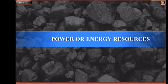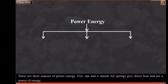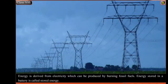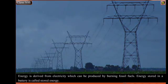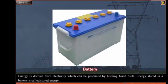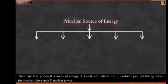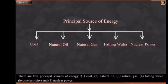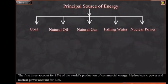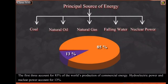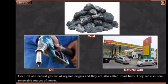Power or Energy Resources: There are three sources of power energy. Fire, sun, and natural hot springs give direct heat and are a source of energy. Energy is derived from electricity, which can be produced by burning fossil fuels. Energy stored in a battery is called stored energy. There are five principal sources of energy: coal, natural oil, natural gas, falling water (hydroelectricity), and nuclear power. The first three account for 85% of the world's production of commercial energy. Hydroelectric power and nuclear power account for 13%. Coal, oil, and natural gas are of organic origins and are also called fossil fuels. They are also non-renewable sources of power.